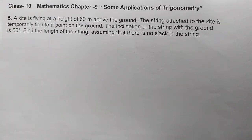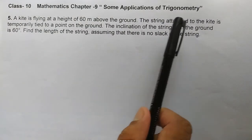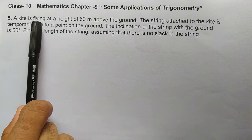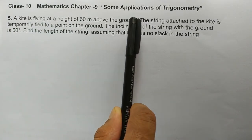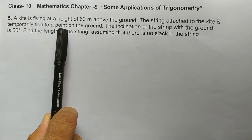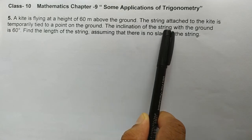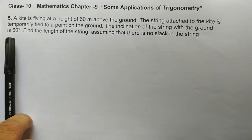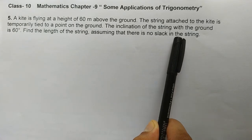Welcome to my YouTube channel. Let's do this question, taken from Class 10 Chapter 9, 'Some Applications of Trigonometry.' The fifth question: a kite is flying at a height of 60 meters above the ground. The string attached to the kite is temporarily tied to a point on the ground. The inclination of the string with the ground is 60 degrees. Find the length of the string, assuming that there is no slack in the string.